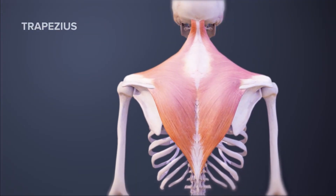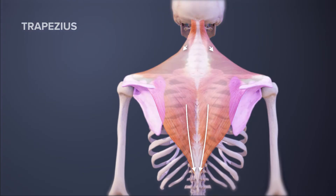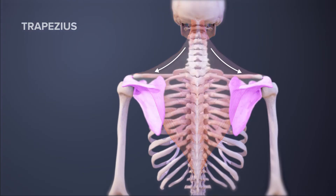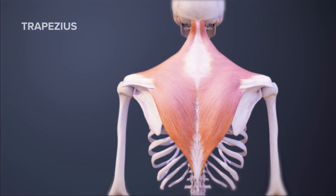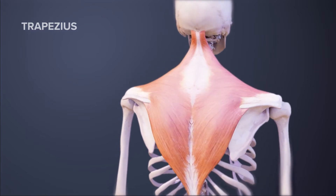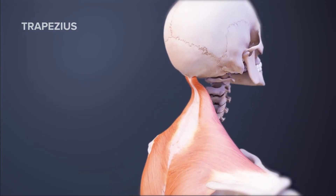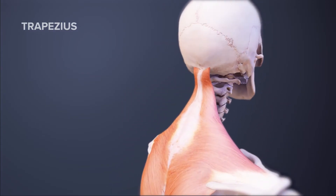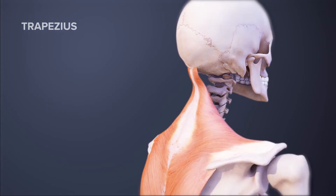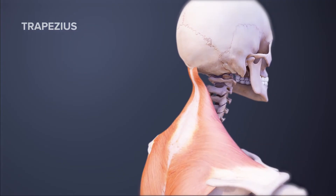The trapezius is a large surface muscle that spans from the base of the skull down the spine to the mid-back, as well as out to the shoulder blade. The trapezius muscle has three parts — upper, middle, and lower. It can help extend the head upward and neck backward, rotating the head, or lifting and/or depressing the shoulder blade.